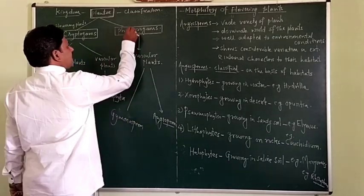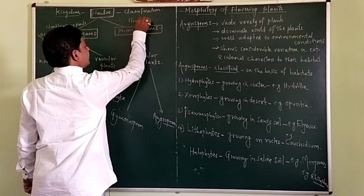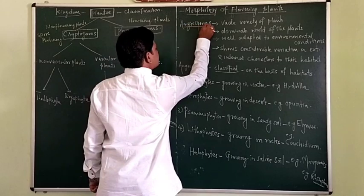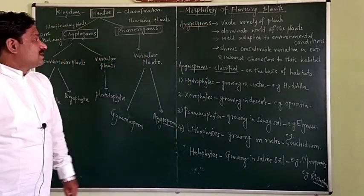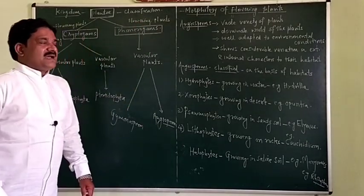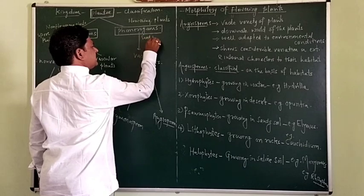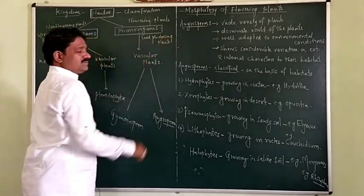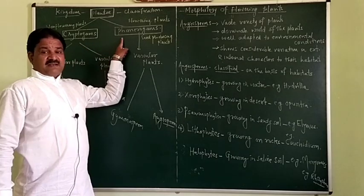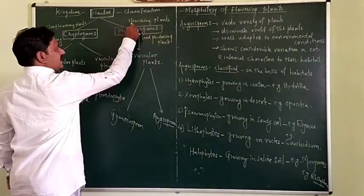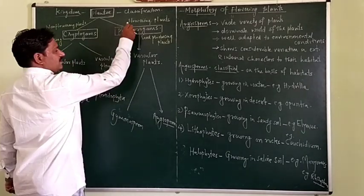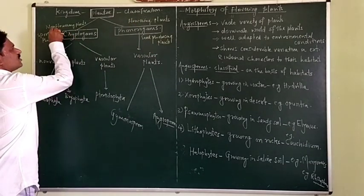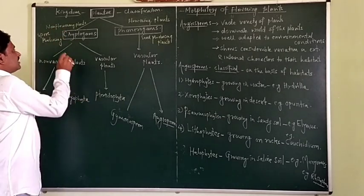Phanerogams — this particular group involves the flowering plants. All the flowering plants are located in division Angiosperm. These are flowering plants and seed-bearing plants, or seed-producing plants. Cryptogams are non-seeded plants, and Phanerogams are seed-producing plants. Plants in which flowers are produced and seeds are produced are Phanerogams; in Cryptogams there are no flowers, so seeds are not produced — these are the spore-producing plants.